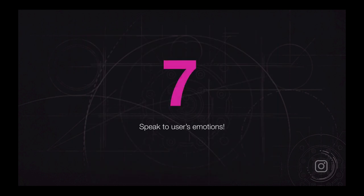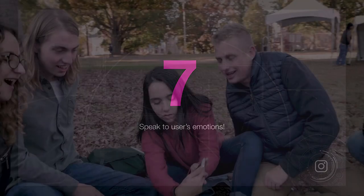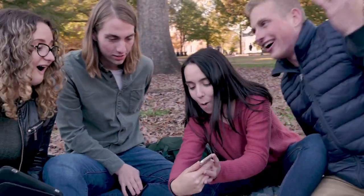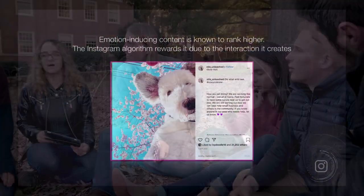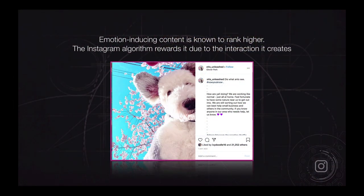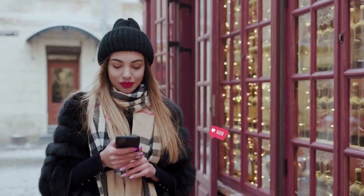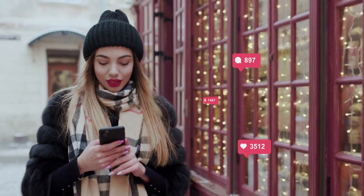Number seven — speak to the user's emotions. Emotion-inducing content is known to rank higher. The Instagram algorithm rewards it due to the interaction it creates. It creates an emotional change and a shift in people which makes them spend more time on your content, which makes them comment and like — more engagement that is going to increase the amount of exposure that piece of content gets.